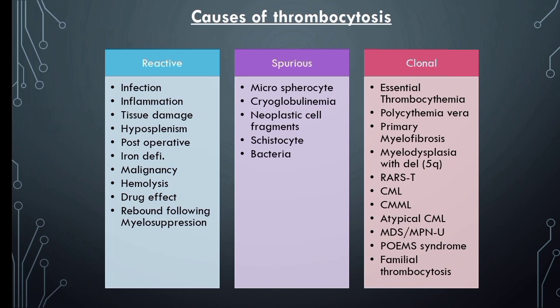Second is reactive thrombocytosis. Once the diagnosis is confirmed by peripheral blood smear review, evaluation determines whether the process is reactive or clonal. Reactive causes include chronic infections like tuberculosis, acute bacterial and viral infections, inflammations like rheumatologic conditions, vasculitis, inflammatory bowel disease, celiac disease, Kawasaki disease, and tissue damage like thermal injury, myocardial infarction, severe trauma, and post-surgical conditions. Hyposplenism, asplenia, iron deficiency, acute blood loss, and hemolysis are also reactive causes.